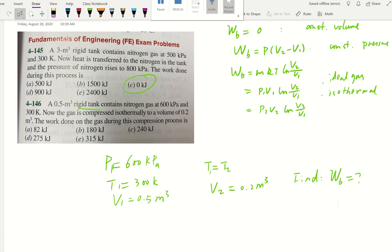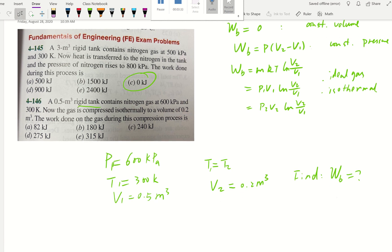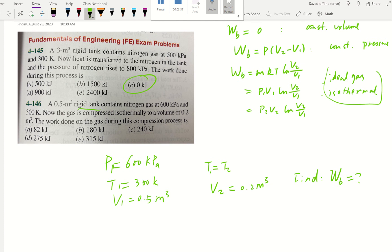Then how do we solve this? If it's boundary work, which scenario? That's going to be scenario number three. Ideal gas because it's nitrogen and also it's isothermal process.